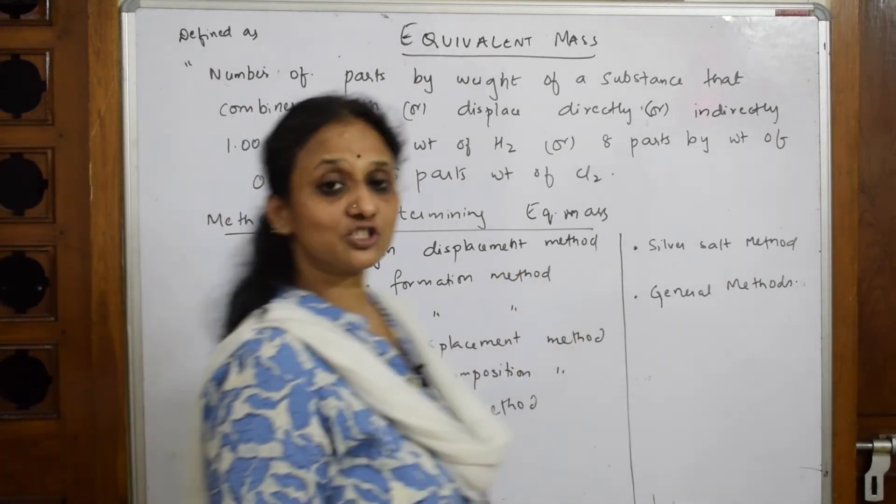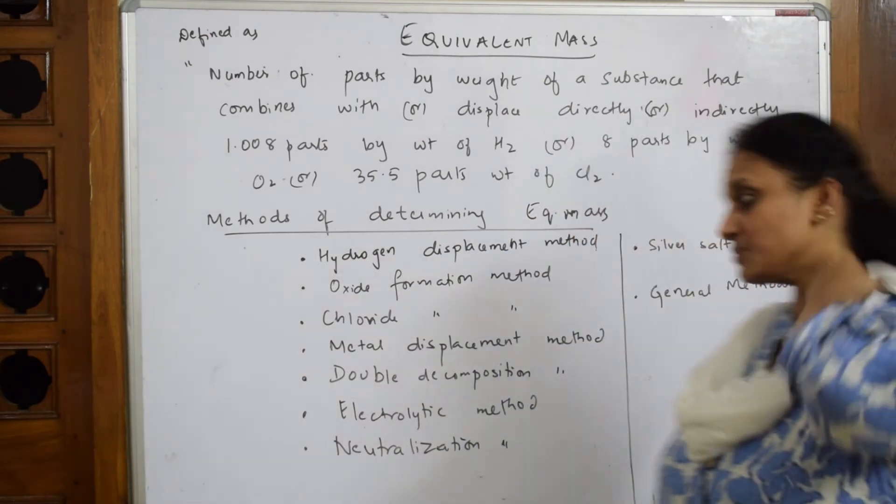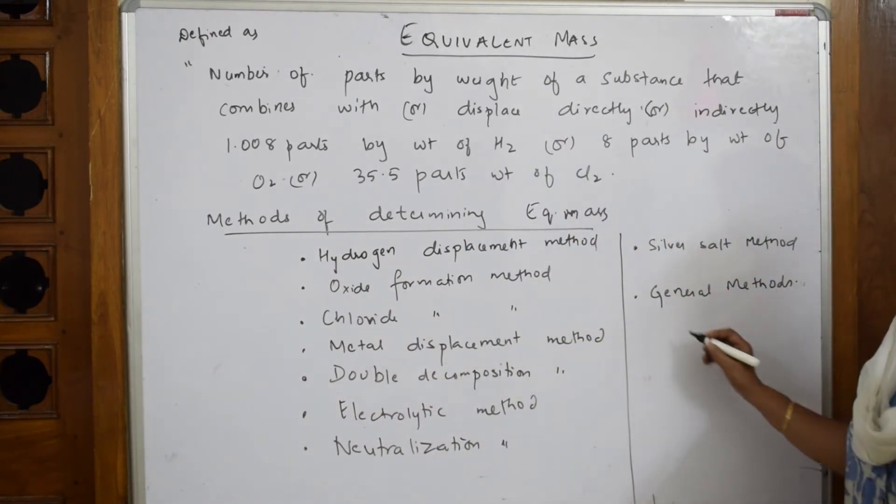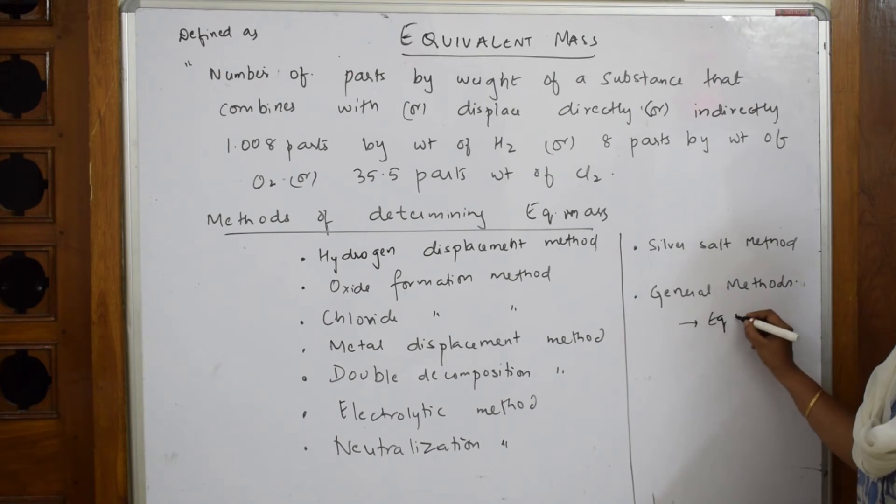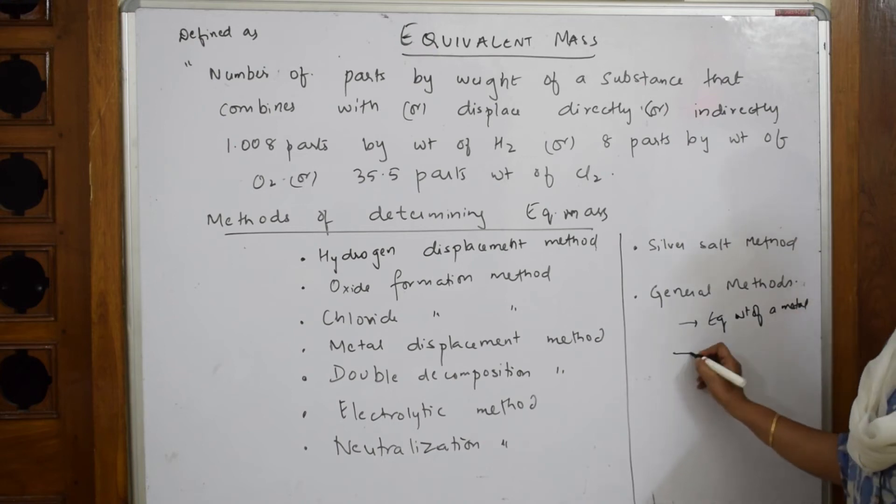I'll also be teaching you what is electrolytic method for calculating equivalent weight. Neutralization method. Silver salt method. As well as the last method is general method. Under this as I said you're going to study about calculating equivalent weight or equivalent weight of a metal. That is a general method which you have. Second equivalent weight of an acid.